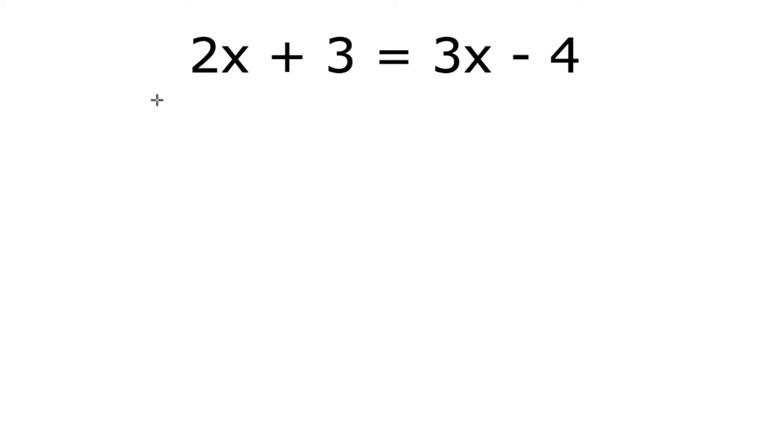So first we're going to try to get rid of this 2x. We're going to minus 2x from this side. We're also going to minus 2x from this side. So this cancels that out, and this leaves us with x on that side.